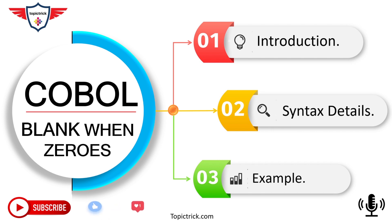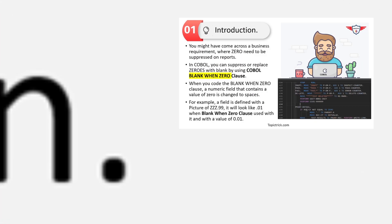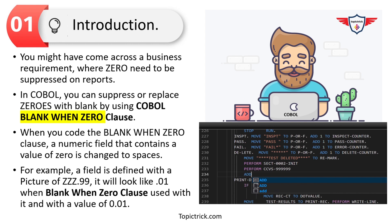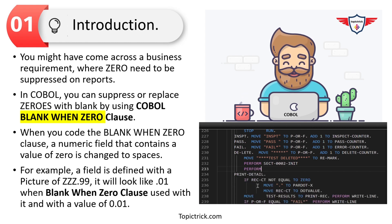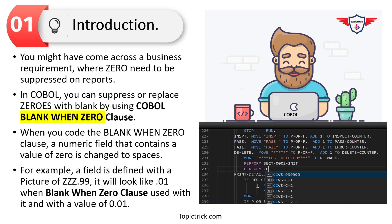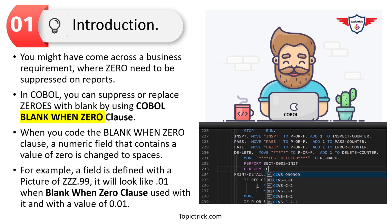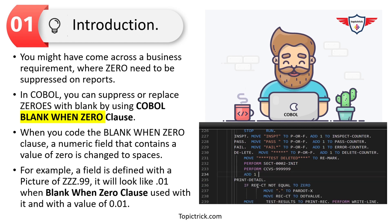Let's say you are working on a reporting project where the business requirement says you need to suppress zeros on a report for specific fields. There are different ways of accomplishing this: you can use the COBOL INSPECT statement to replace all zeros with spaces, or design custom logic to do the same. But the best solution is to use the COBOL BLANK WHEN ZERO clause.